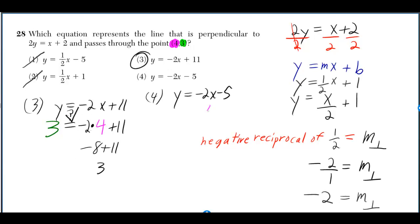Which means if we would have done the same thing for choice 4, then they're not going to be equal. Negative 8 minus 5 gives you negative 13, which is not equal to 3.